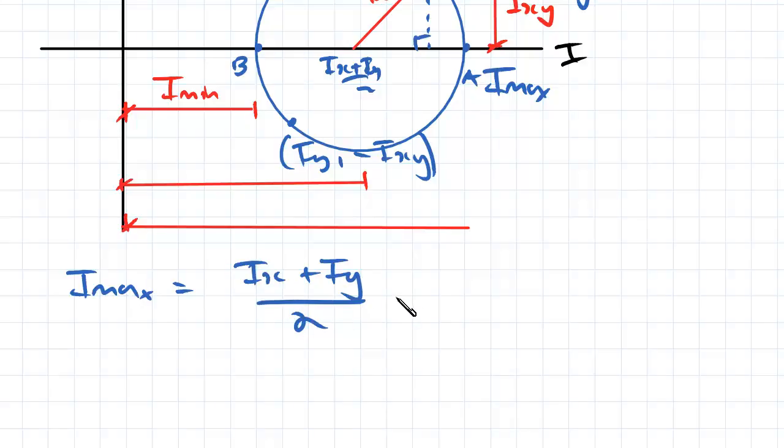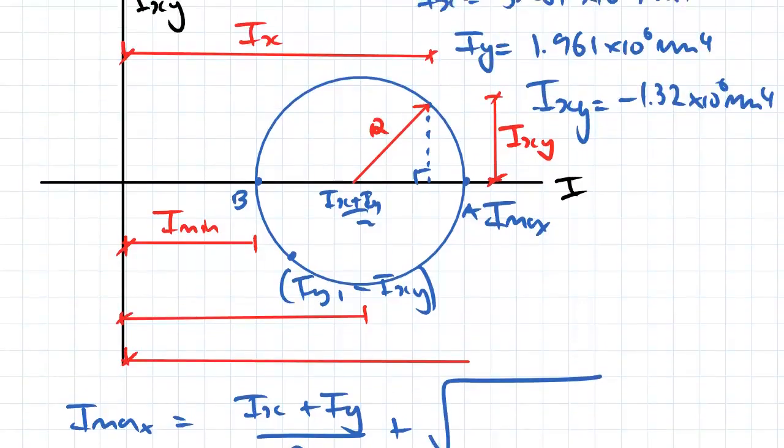And then we add on to that, because we want the max, the radius. And using Pythagoras's theorem, firstly we can work out what this bottom distance is here. That's going to be Ix minus Ix plus Iy over 2.